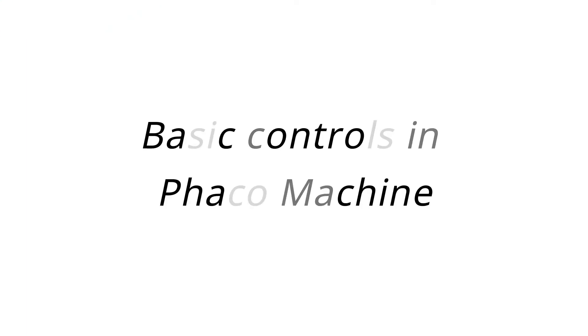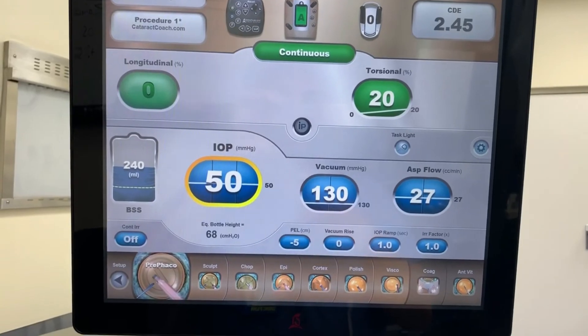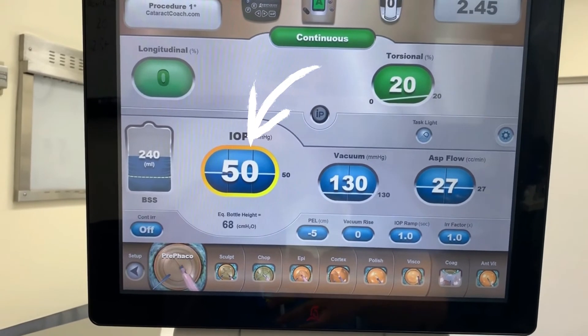What are the basic controls in phaco machine? The first control is IOP control. The phaco emulsification procedure was broken down into eight stages, and mean IOP was calculated across each stage. Intraocular pressure was measured during bimanual micro-phaco through two different incision sizes and with and without the cruise control connected to the aspiration line.